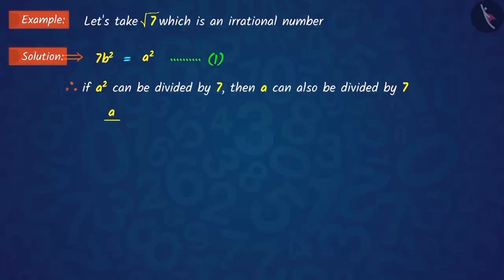Suppose when we divide a by 7, we get c as a quotient, where c is an integer.